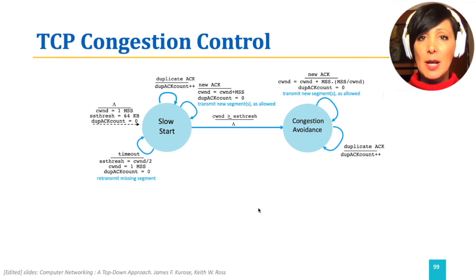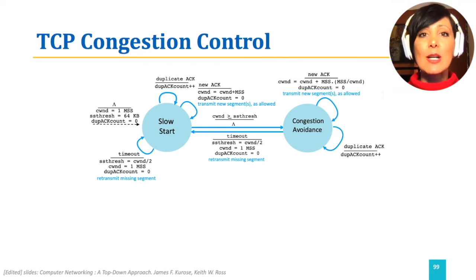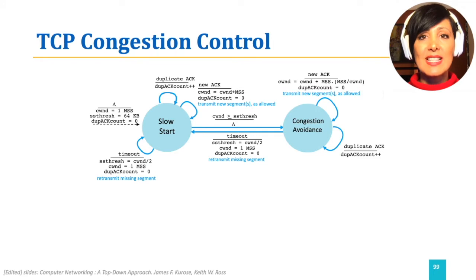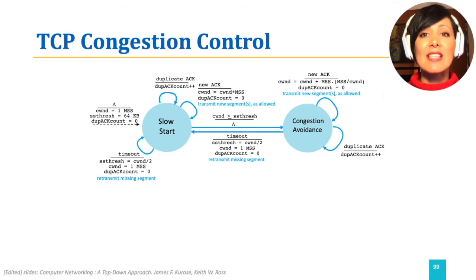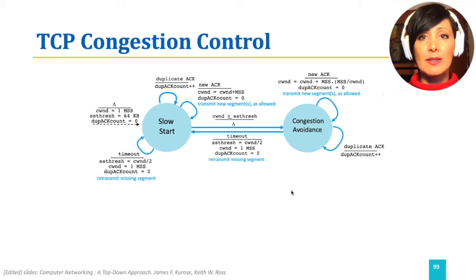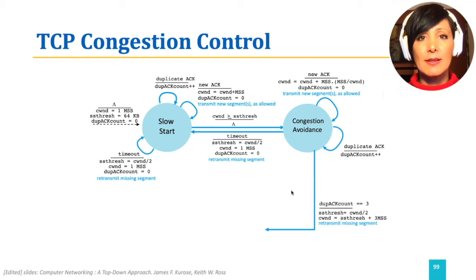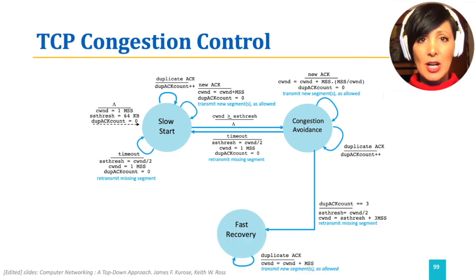If a timeout happens in congestion avoidance state, CWND is reset to 1, the SS threshold is set to half of the window size when congestion was experienced, and the state changes back to slow start. If triple duplicate ACKs happen, which is a milder indicator of congestion, the state is changed to fast recovery.